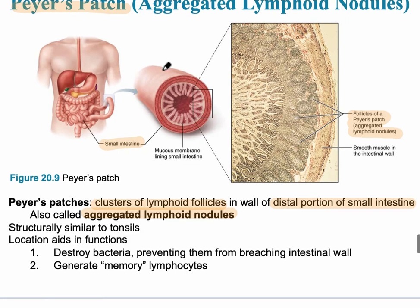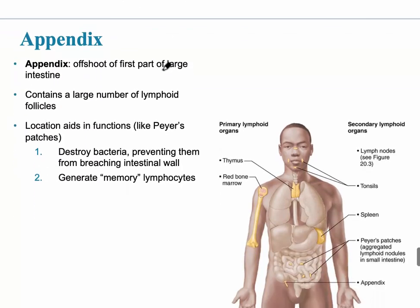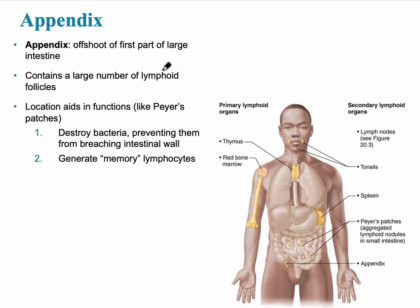The appendix is another example of MALT. It is an offshoot of the first part of the large intestine and contains a large number of lymphoid follicles. Its job is to destroy bacteria, working similarly to the Peyer's patches, preventing them from breaching the intestinal wall. It can also generate memory lymphocytes.